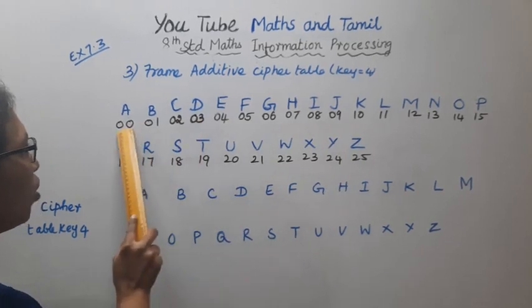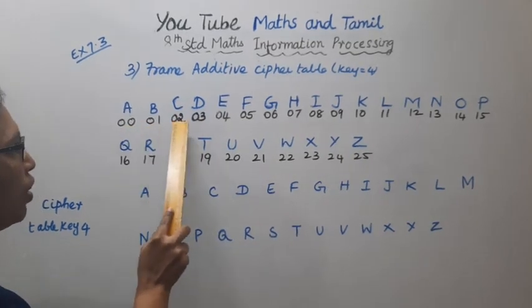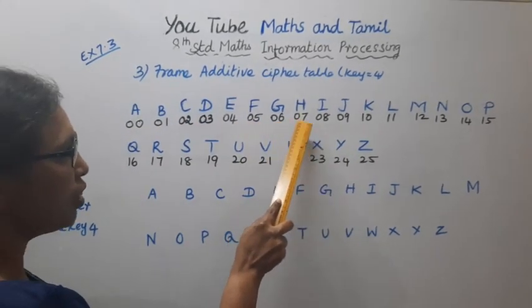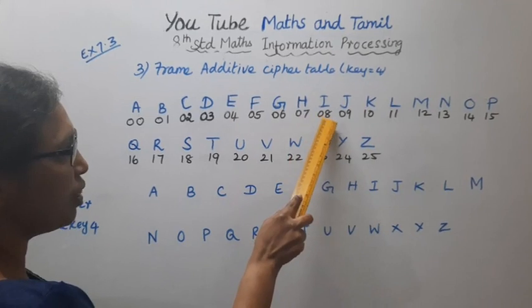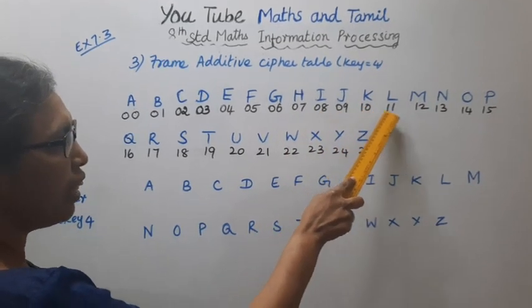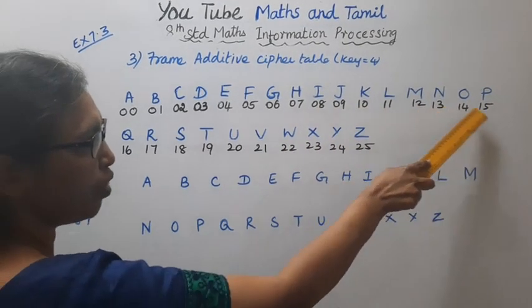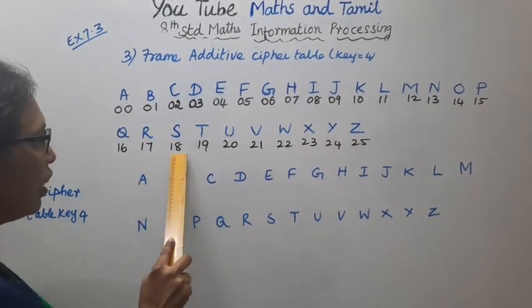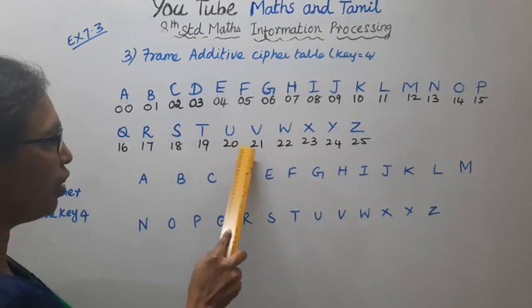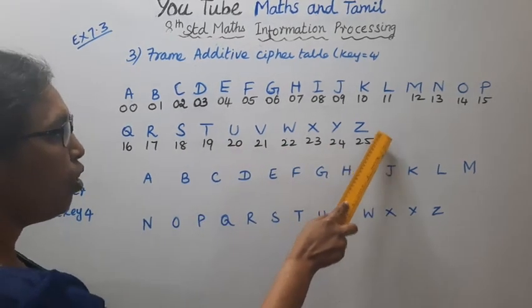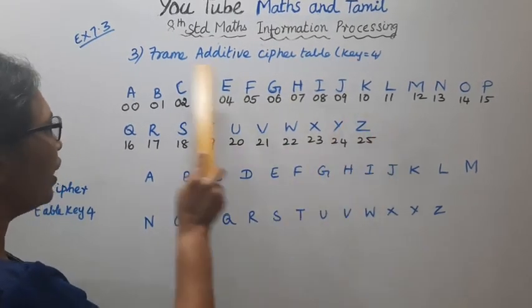The letters A to Z are mapped to numbers: 0, 1, 2, 3, 4, 5, 6, 7, 8, 9, 10, 11, 12, 13, 14, 15, 16, 17, 18, 19, 20, 21, 22, 23, 24, 25.